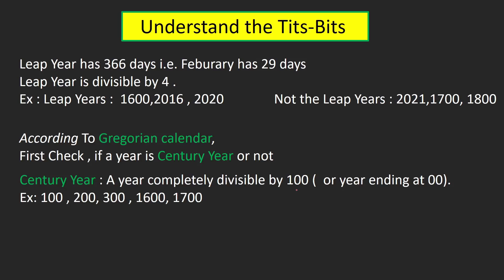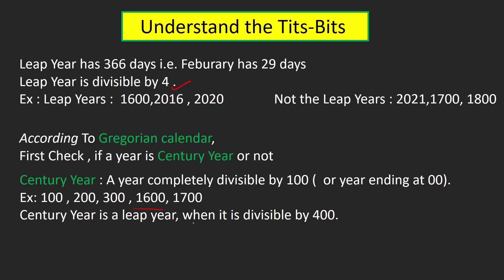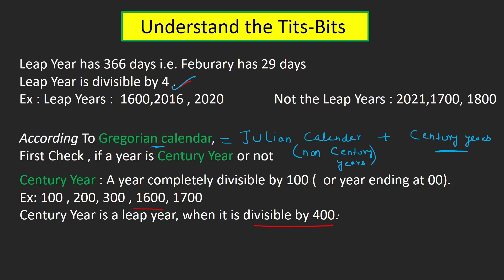A century year is a year completely divisible by 100 — meaning on division by 100 it gives remainder 0, or any year ending with double zeros. For example, 100, 200, 1600, 1700 are all completely divisible by 100. The Gregorian calendar says divisibility by 4 is true only for non-century years. For century years, a century year will be a leap year only when it is divisible by 400. So Gregorian calendar equals Julian calendar plus the century year concept: for non-century years divide by 4, for century years divide by 400.